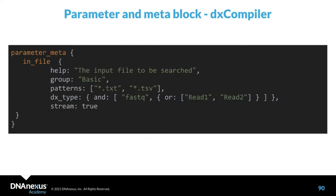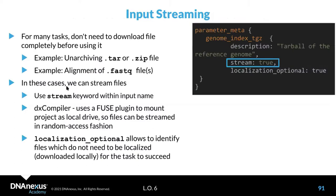We can also specify patterns in parameter meta. Regarding streaming: sometimes you don't need to download the file completely — you just want to read it and use it. For that, we can set the stream key with value true. Additionally, you can use localization_optional, a parameter that allows you to identify files which do not need to be downloaded locally for tasks to succeed, saving you money and time.